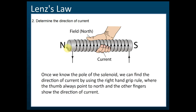If you know that this is a north pole and this is a south pole, the right-hand grip rule tells us that the thumb is always pointing to the direction of the north pole. If this is the north pole, then you point the thumb here, and the other fingers show the directions of the current.